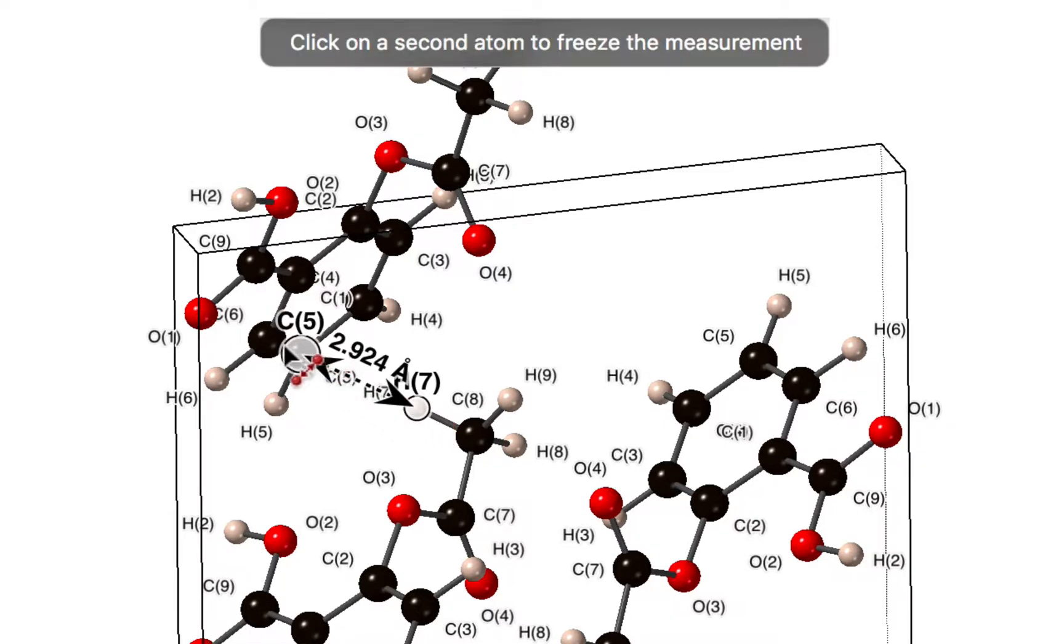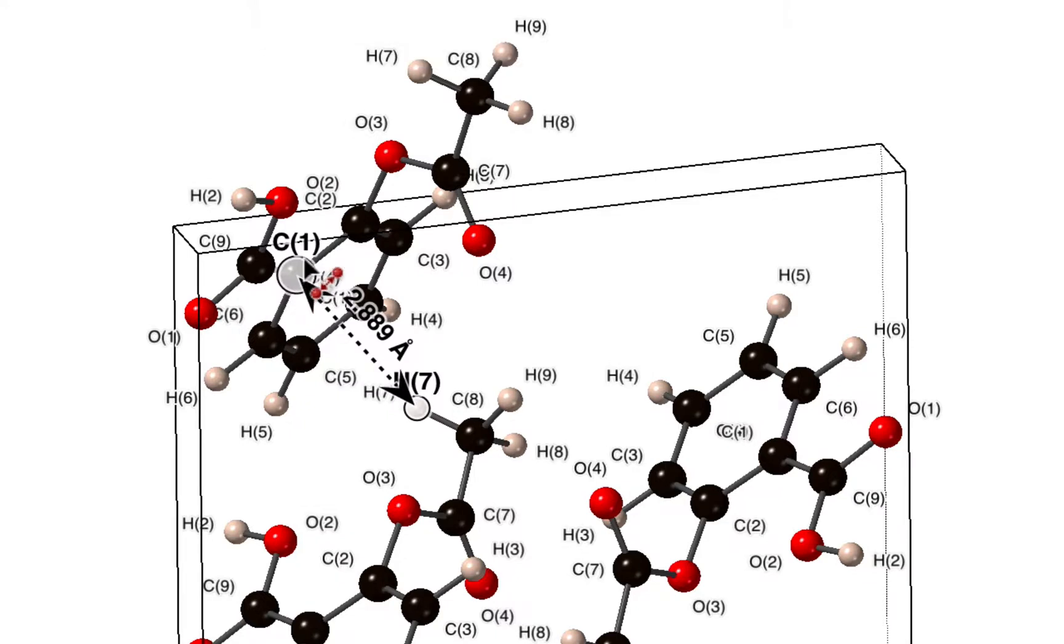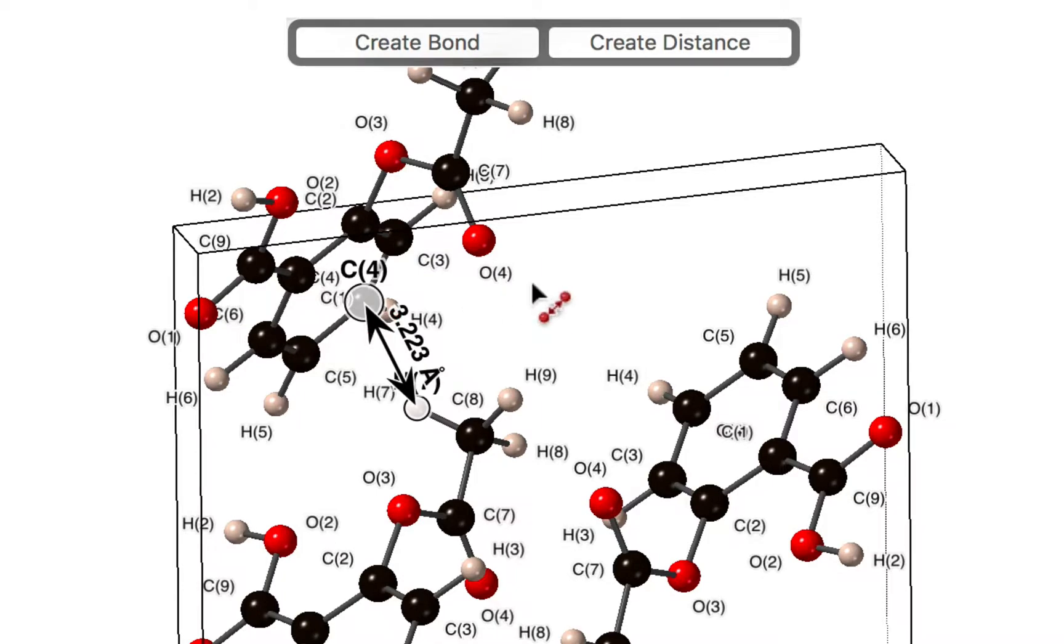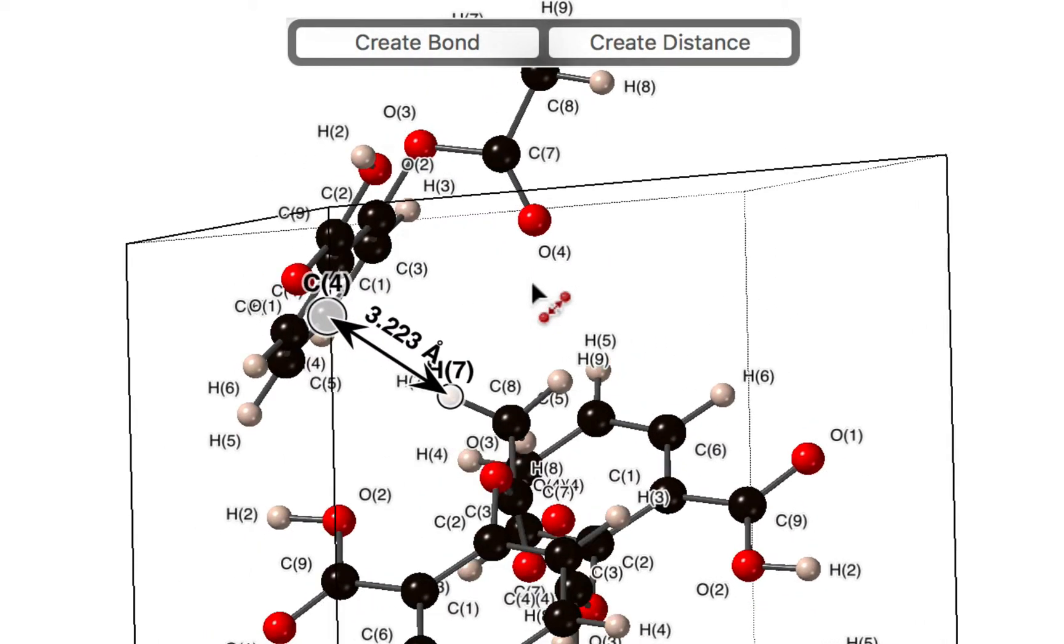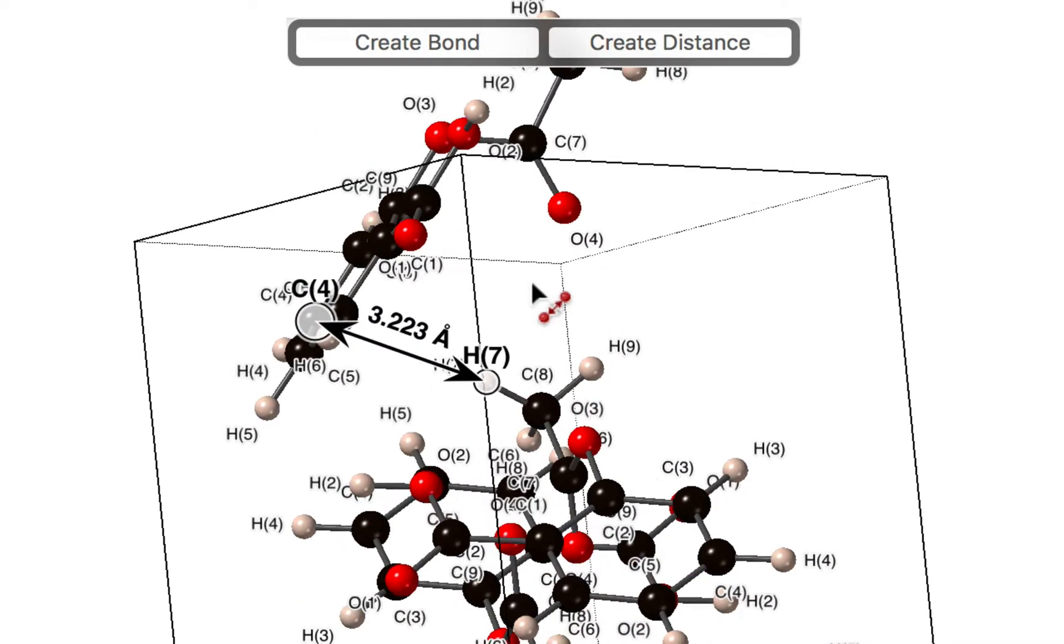We can click on atoms in the plot to anchor them, and then this tool has a rollover mode that lets you interactively measure distances between atoms. If you click again that locks the measurement, and we can rotate the plot and see the measurement that we've made.